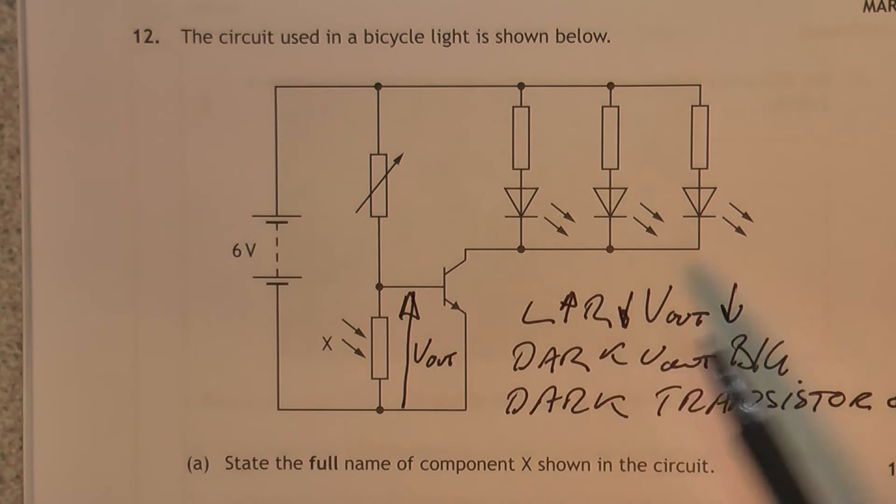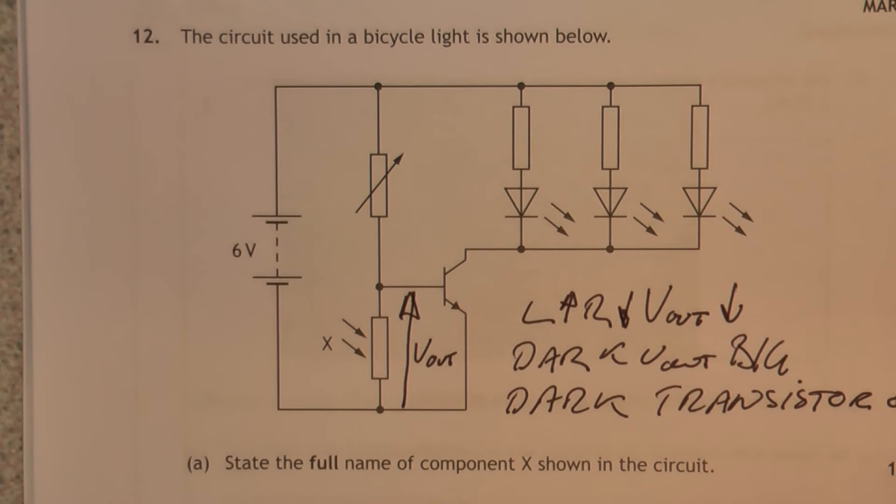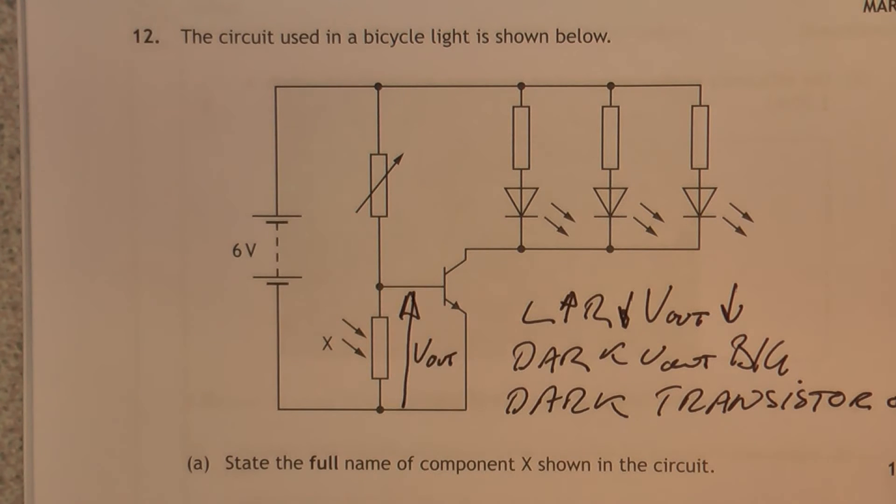When the transistor's on, these three LEDs, which are wired in parallel, they will switch on. The variable resistor lets you adjust the sensitivity. So you can change the light level that the LEDs come on.